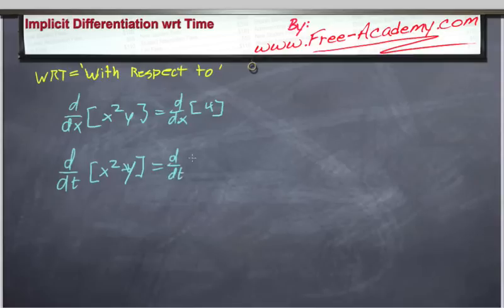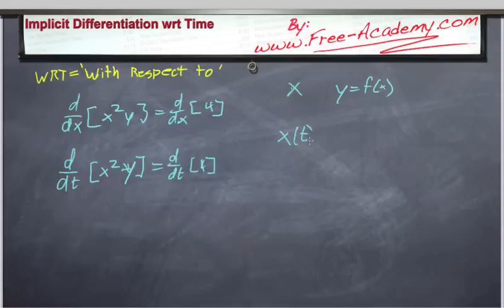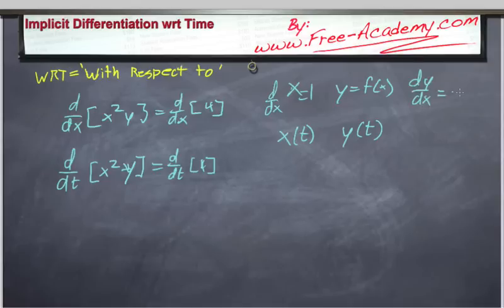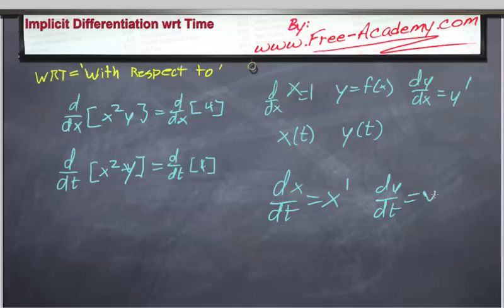What's the difference? Well, what made the last lectures confusing is that you had x, and then you had y, which was a function of x. But now we're saying that x is going to be a function of time, and y will also be a function of time. So where the difference arises is when you'd have the derivative of x with respect to x, it was equal to 1, and the derivative of y with respect to x was equal to y prime. When you take the derivative of x with respect to t, it's going to equal x prime, and when you take the derivative of y with respect to t, it's going to equal y prime.